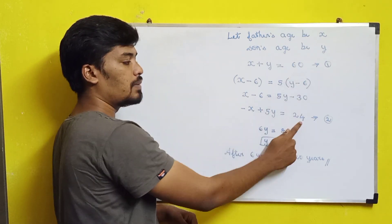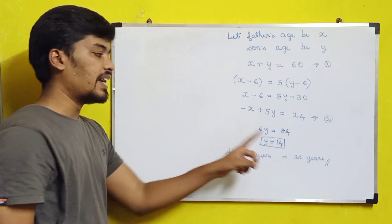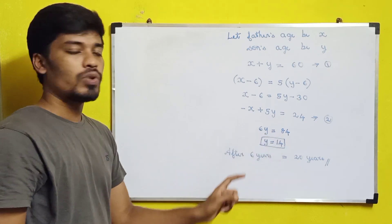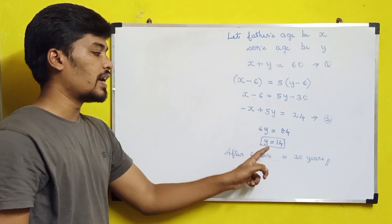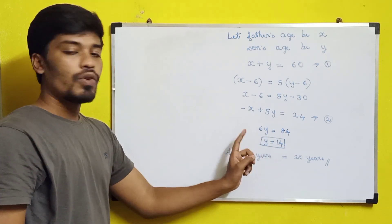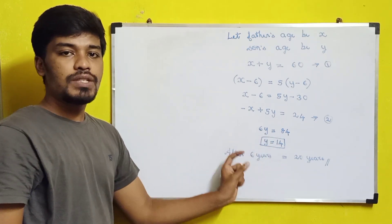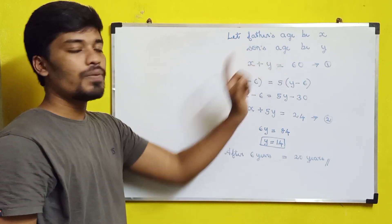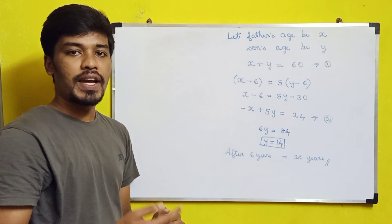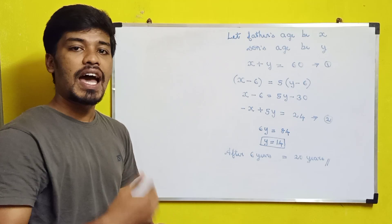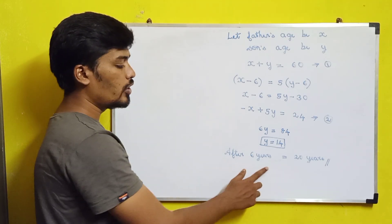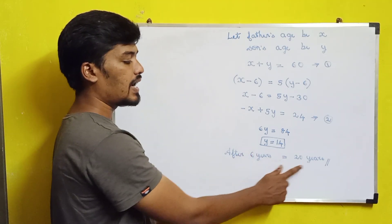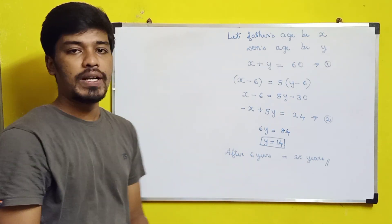So y plus 5y gives 6y, and 60 plus 24 gives 84. Therefore 6y equals 84, so y equals 14. This value of y is the present age of the son. Since they are asking for the son's age after 6 years, we add 6 to get the answer: 20 years.